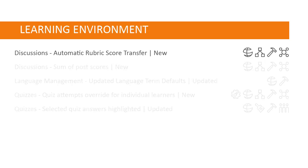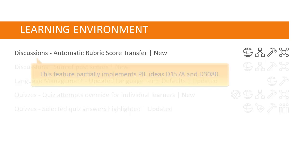When assessing a discussion topic, the overall score of an associated rubric now transfers automatically to the topic score. This feature partially implements PI Ideas D1578 and D3080.